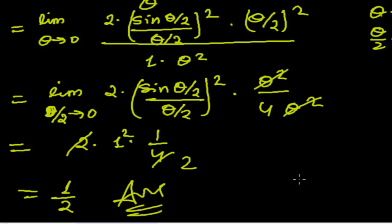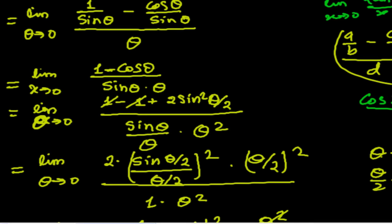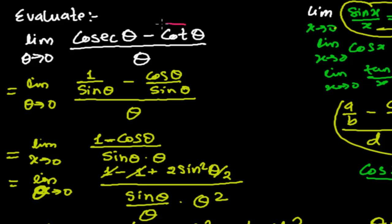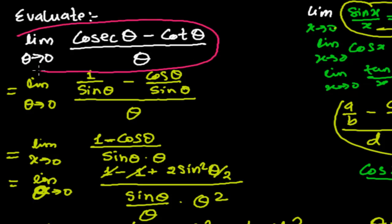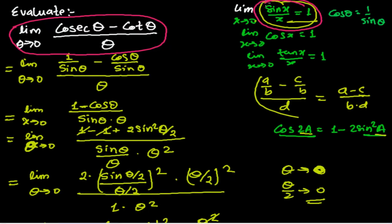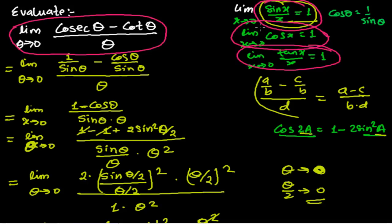So that's how we solve this problem. In any such problem, depending on the situation, we can use the half-angle formula or any identities available. The key is to convert into the standard forms — mostly sin(x)/x, sometimes tan(x)/x, or others. Sometimes you may need to rationalize, find LHS then RHS then equate. Convert into standard form and solve the limit. We'll meet in the next video with different methods of solving limits. Bye bye.